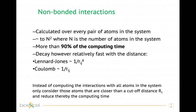We know that both the Lennard-Jones potential and the Coulomb potential decay very fast with distance. So one solution that was developed is to cut those potentials at a certain point, in order to save computational time.